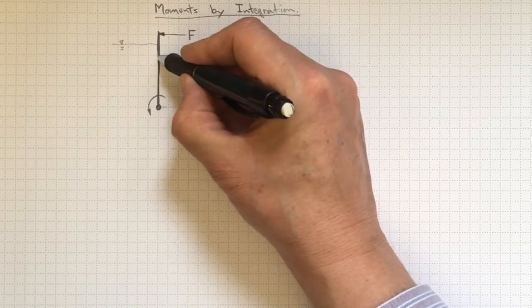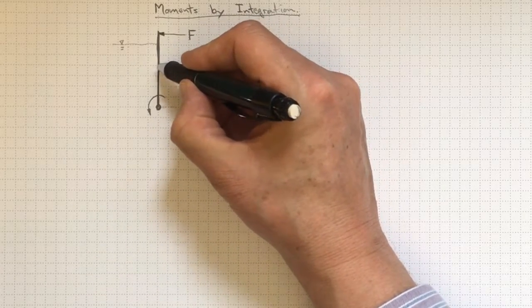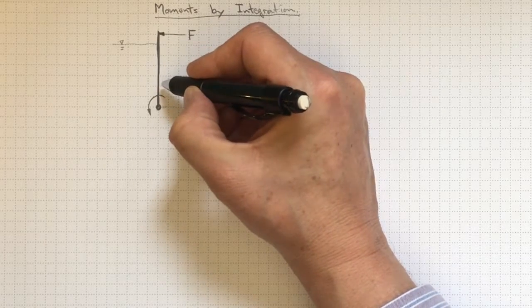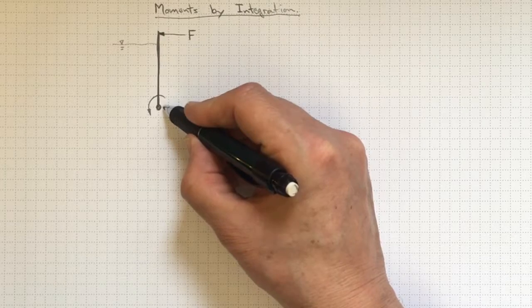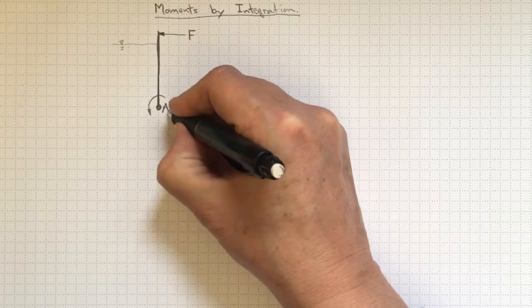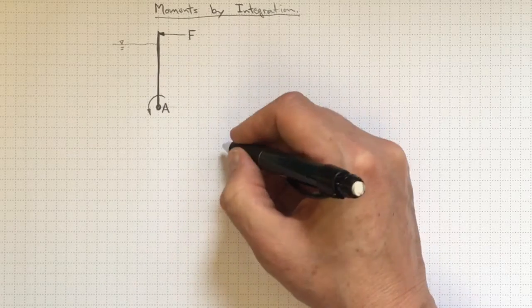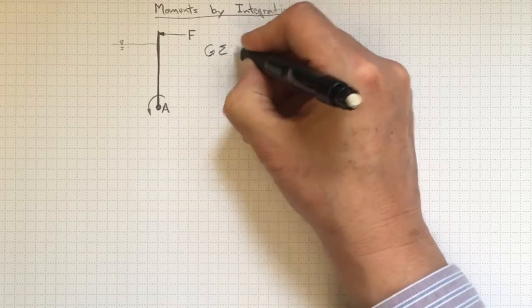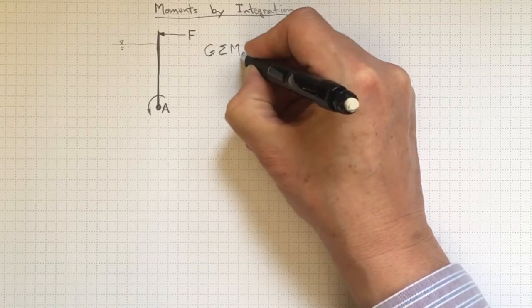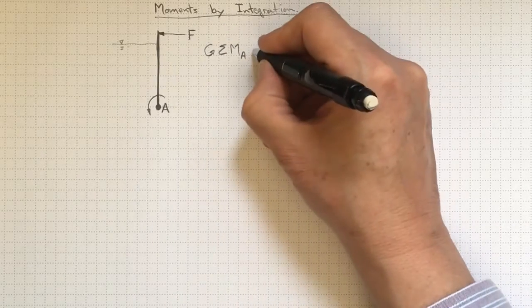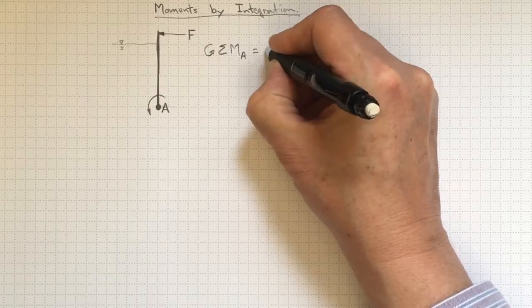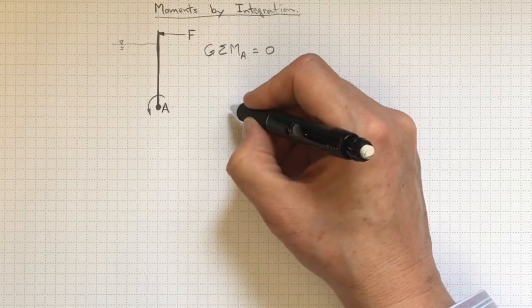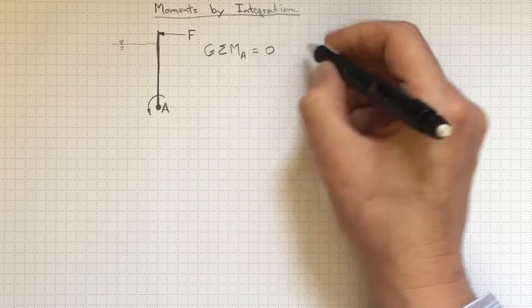Now we know that if this gate isn't moving, then the sum of the moments about any point on that gate must be equal to zero. And we can avoid worrying about the force down here at the hinge by looking at the sum of the moments about that location down at the hinge. So let's take the counterclockwise sum of the moments about the center of that gate A, and let's say that they must be equal to zero for the gate to not be moving. So if the sum of all of those moments is equal to zero,